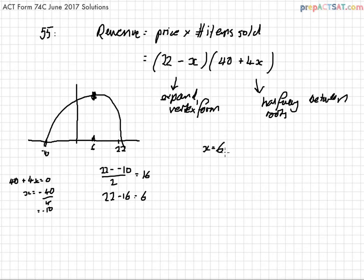The question is asking us for the revenue when X is 6. We just plug that into the equation: 22 minus 6 times 40 plus 4 times 6. So that's 16 times 40 plus 24.